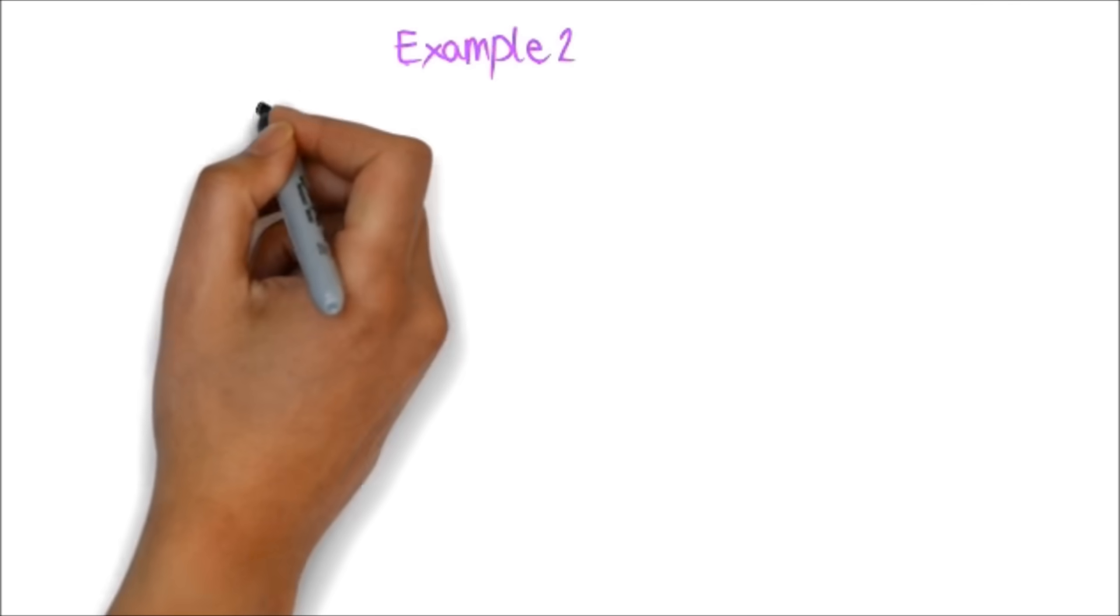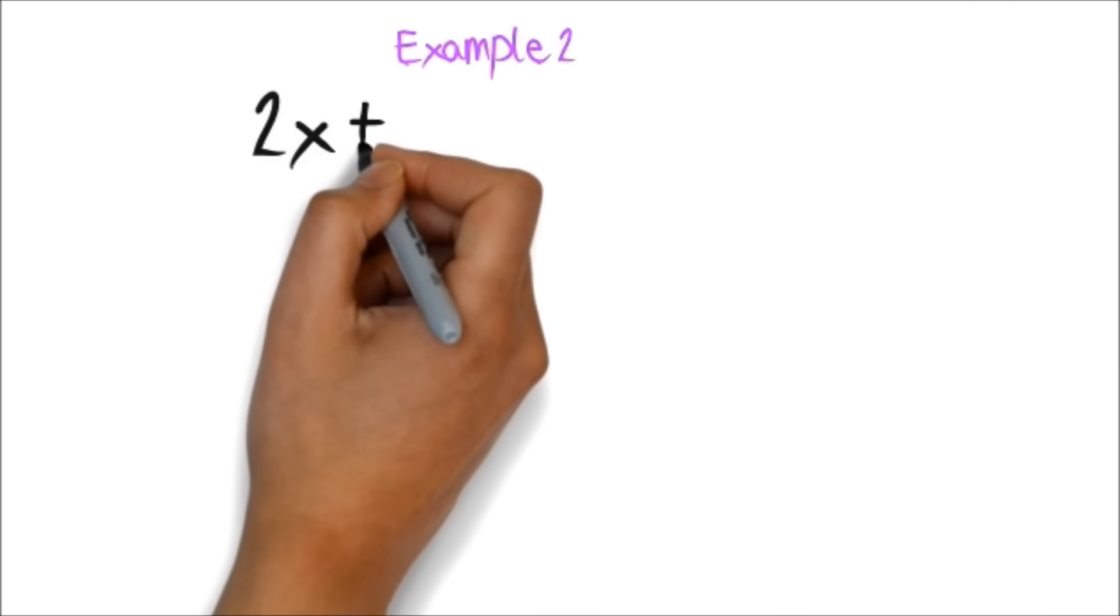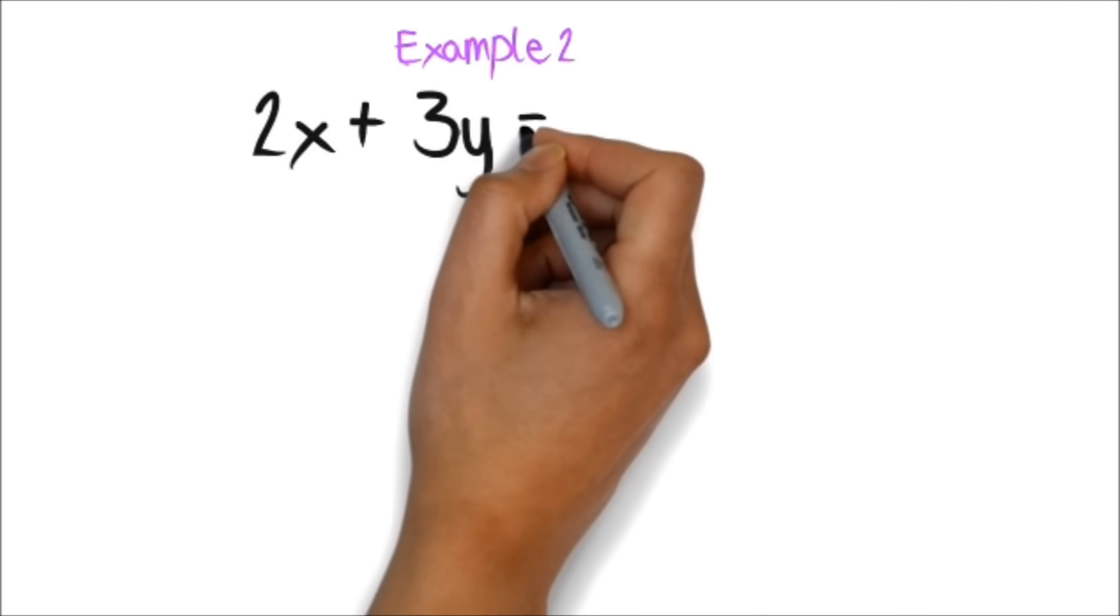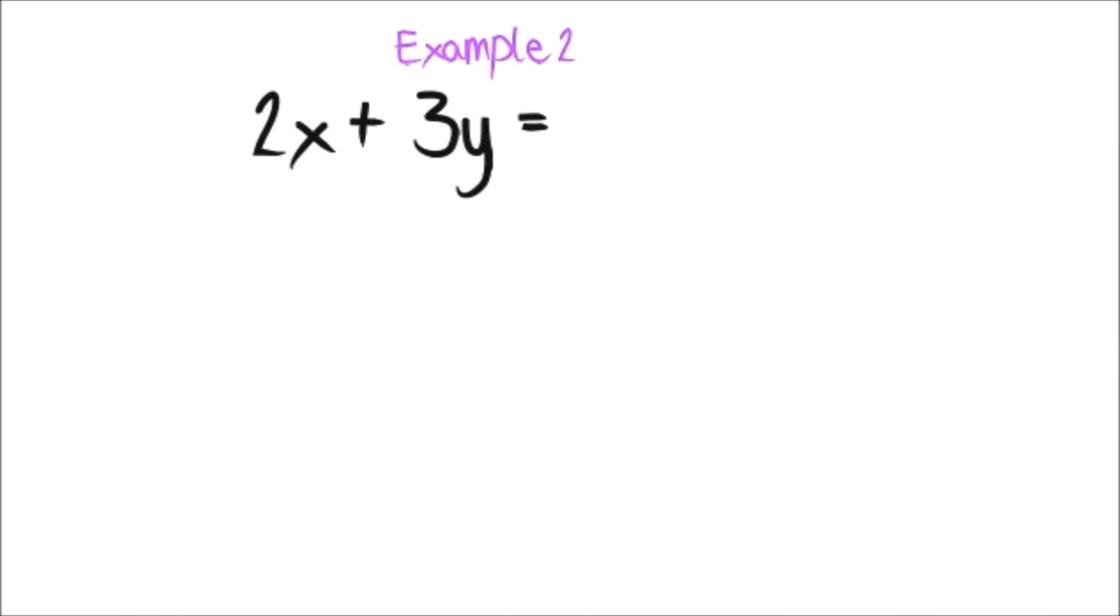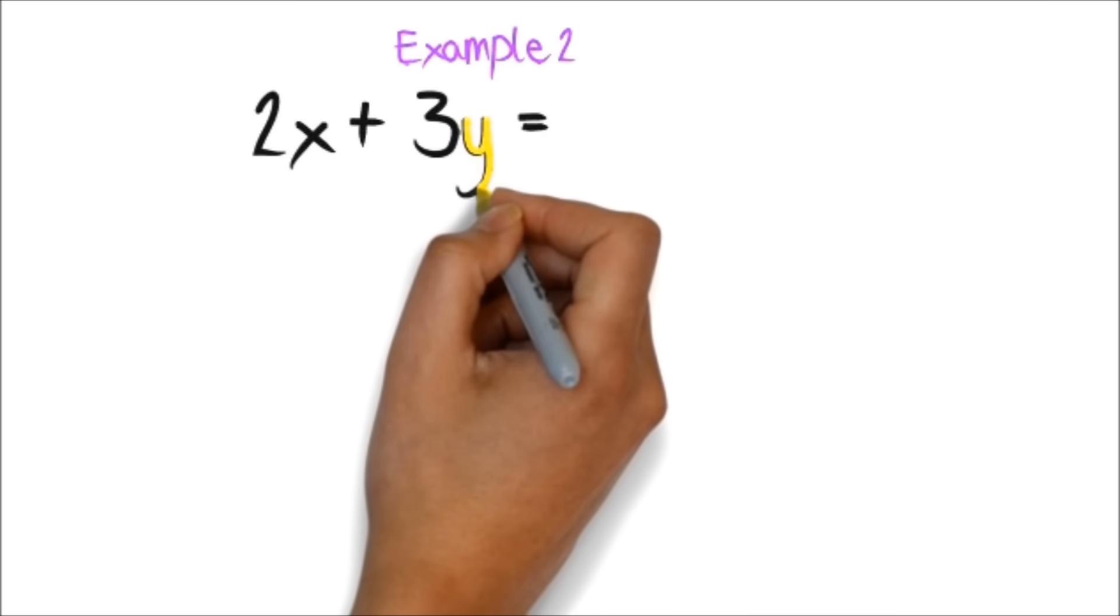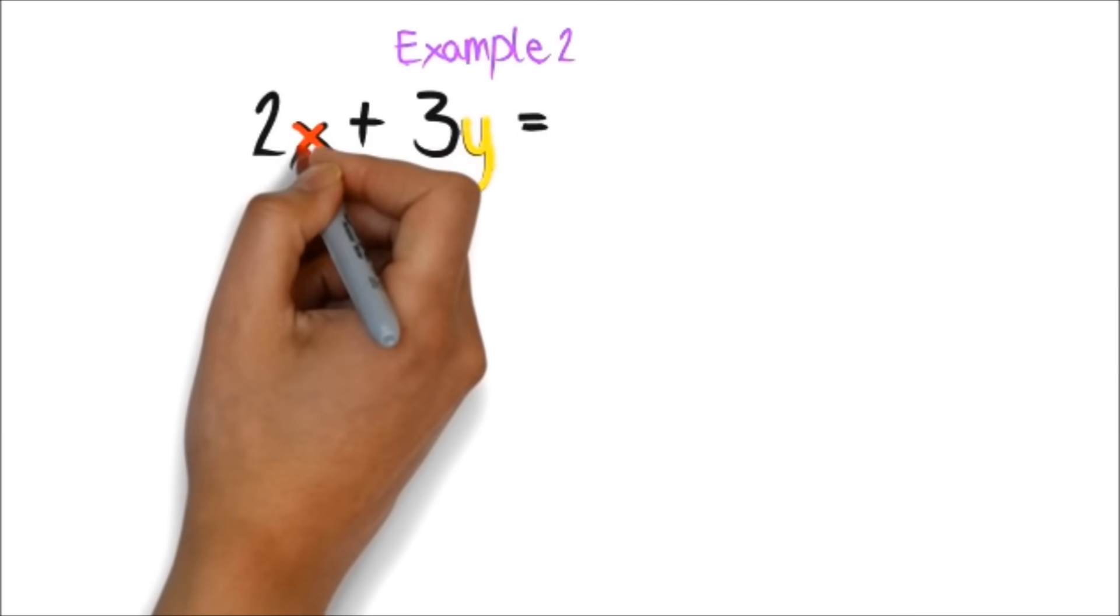Example 2. If you have 2x plus 3y, you cannot add them because they have different letters after them. One is y and the other is x.